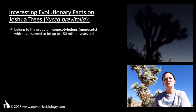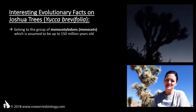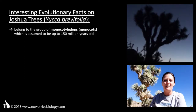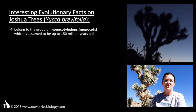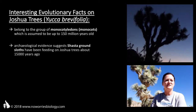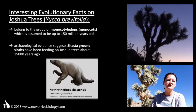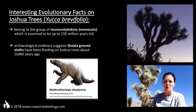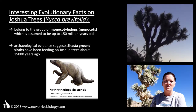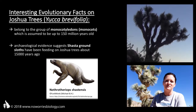Joshua trees as a species are not quite that old, but they have been around for quite a while. There is archaeological evidence which suggests the Shasta ground sloth was feeding on the fruits of Joshua trees about 15,000 years ago. By doing so, this prehistoric animal may have contributed to the distribution of Joshua trees.